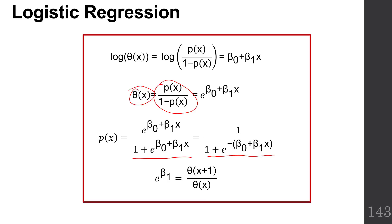And last but not least, if you take e to the beta 1 power, then you have the way that the odds change at the next x relative to the current x.